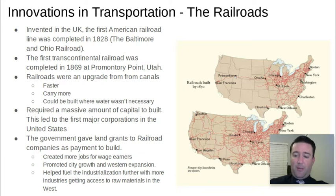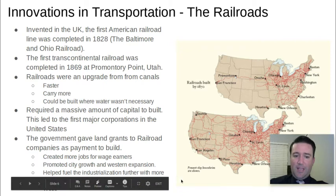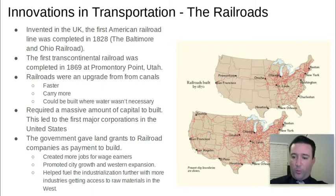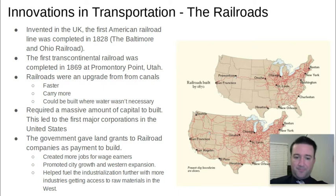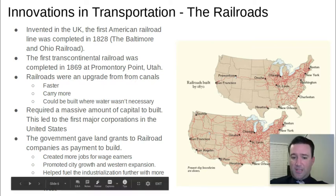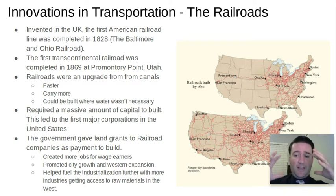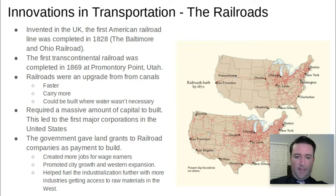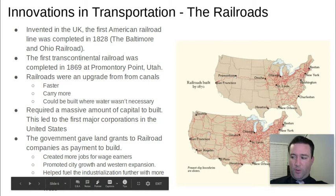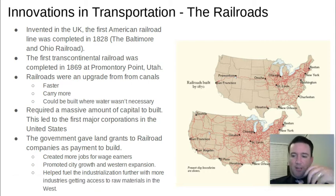The railroads were built through private industries with the backing of the United States government. This created more jobs for wage earners — important as more people immigrated to the country and freed slaves needed jobs. It promoted the growth of cities and western expansion. The United States, guided by the idea of Manifest Destiny, was determined to claim lands from sea to sea, and railroads helped populate those lands. It also fueled further industrialization as raw materials from the West were brought back East to be manufactured into goods.